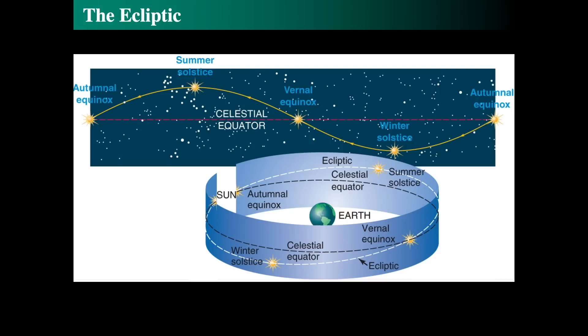The vernal equinox occurs when the sun is traveling on the ecliptic and it crosses from south of the celestial equator to north of the celestial equator. It's also where we define the right ascension and declination of the equatorial coordinate system.